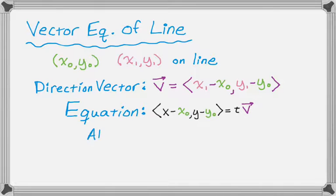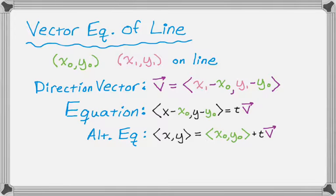And an alternative version of this can be written as just x comma y is equal to the vector x0 comma y0 plus t times v. So that's a really common way that you'll see it used.